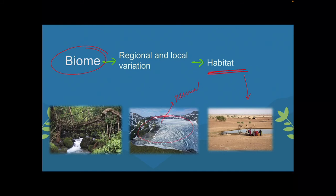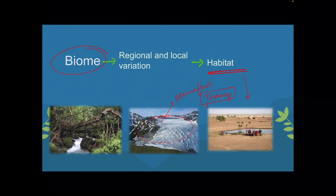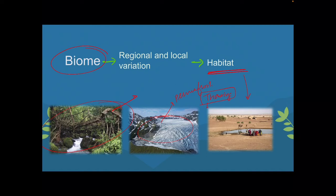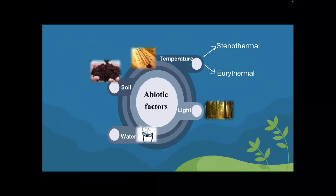Permafrost — which we've heard about in the context of permafrost thawing, the melting of soil frozen for thousands or millions of years — is also a habitat. Tropical evergreen forest or Meghalayan forest are also habitats. So a habitat is a regional and local variation within a biome.